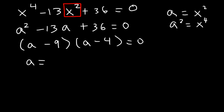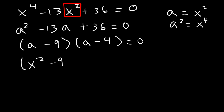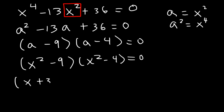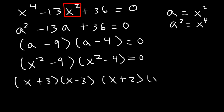Before solving for a, I want to factor completely. So I'm going to replace a with x squared. Therefore, we have x squared minus 9 and x squared minus 4, which we can factor each of those expressions using the difference of perfect squares technique.